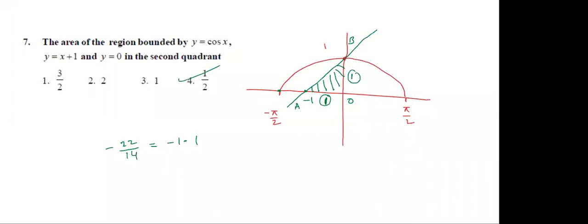The answer is the fourth option. Required area = area of triangle OAB = (1/2) × base × height = 1/2. Without solving the integral, we identified the answer just from the diagram — if you know the diagram, you get the answer.